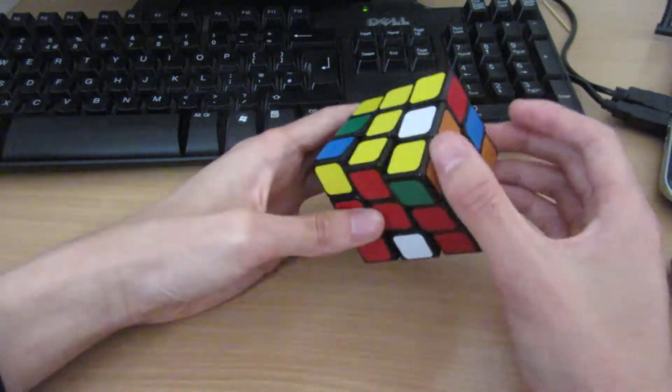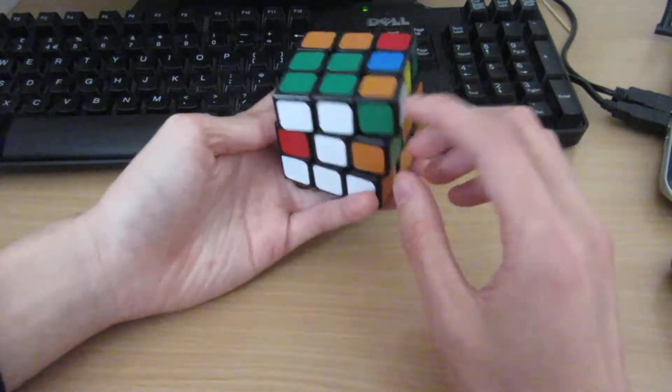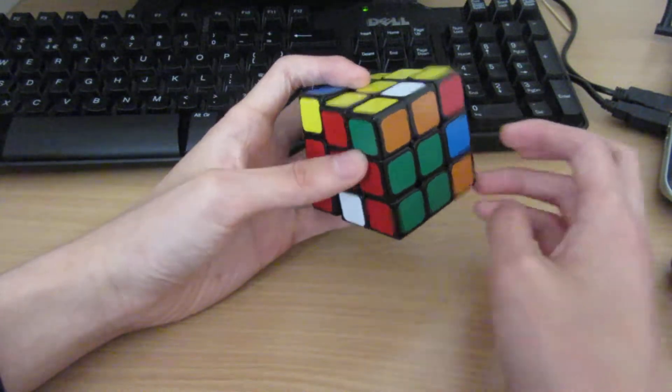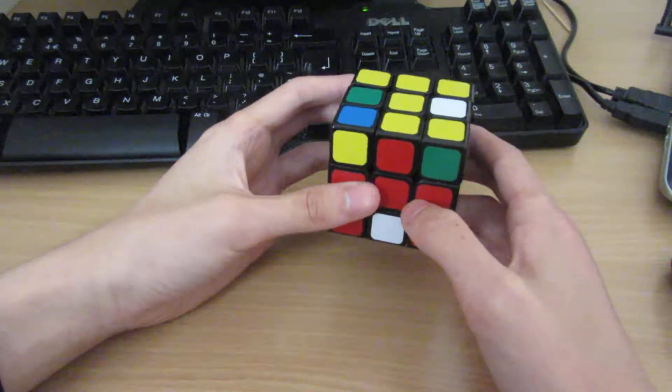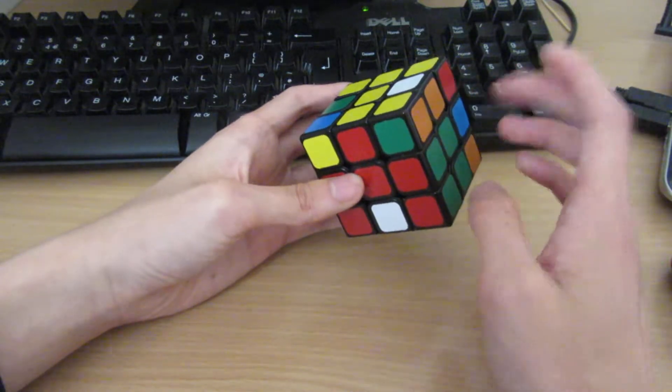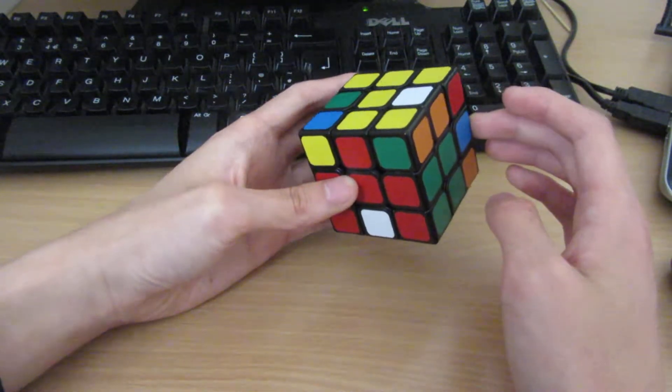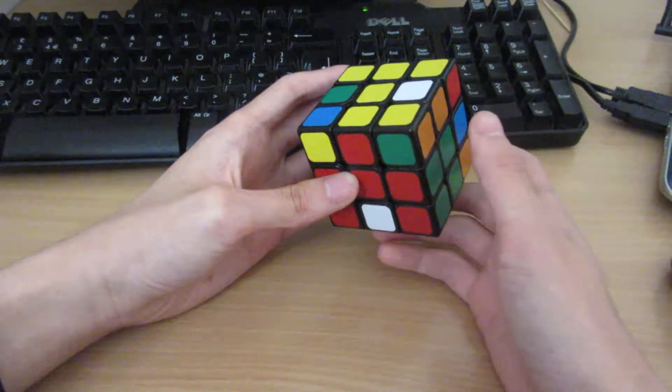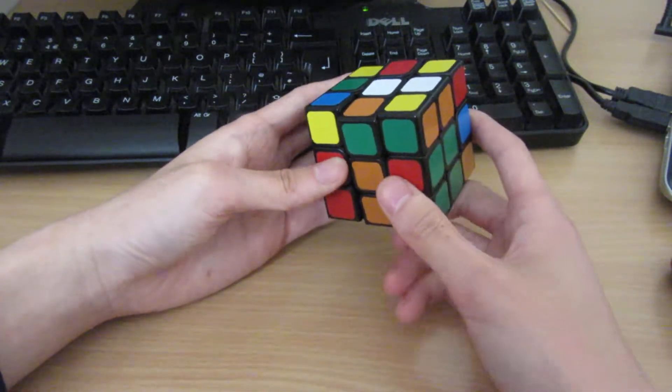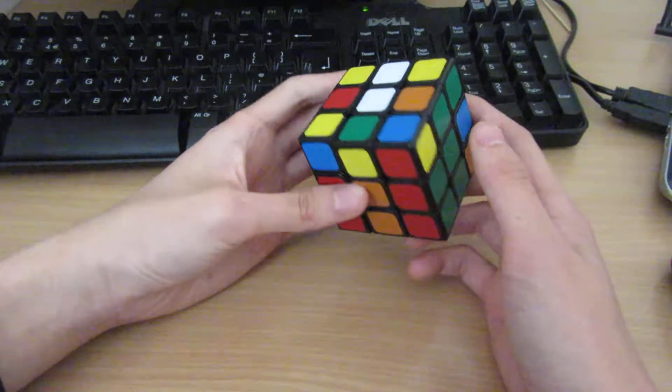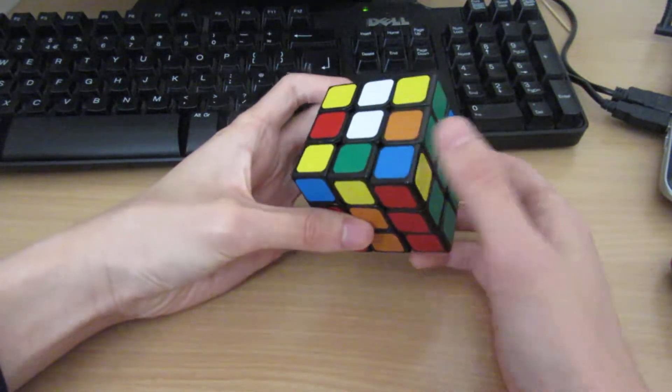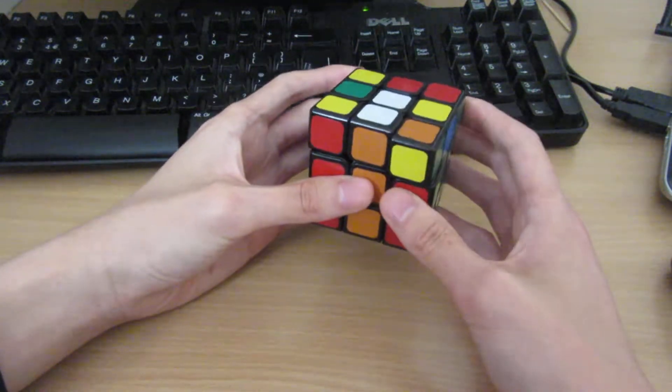So I know which corner is here, it's just the white orange green one because I saw it going down. But I need to know where the edge that goes with it is. By process of elimination, I can figure out that it's at the very back, but I don't know which orientation. I'm just going to do M2 and see what happens. Turns out it's oriented pretty nicely and I can just finish the pair like that.